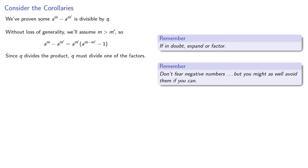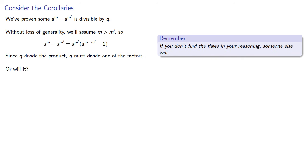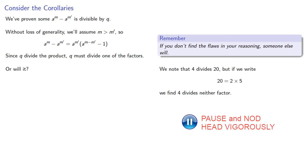And since q divides the product, q must divide one of the factors. Or will it? And the thing to remember is that if you don't find the flaws in your reasoning, someone else will. So let's try an example. Well, we note that 4 divides 20. But if we write 20 as a product 2 times 5, 4 divides neither factor.